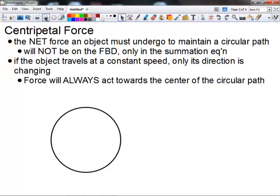Because it's a net force, let's highlight that just to make sure that we see that. Centripetal force will not be on a free body diagram, only in your summation equation. If the object travels at a constant speed, only its direction is changing when it's in a circular path. So the force is always going to act toward the center of that circular path.